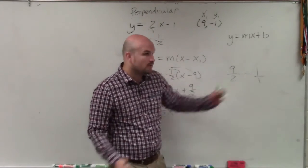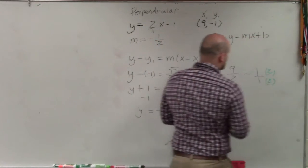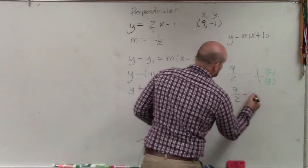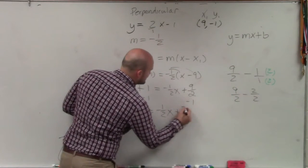Well, the common denominator between 2 and 1 is going to be 2. So I'm going to create equivalent fractions. So I have 9 over 2 minus 2 over 2, which equals a positive 7 halves.